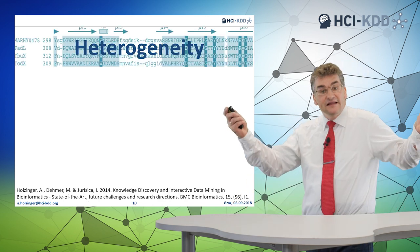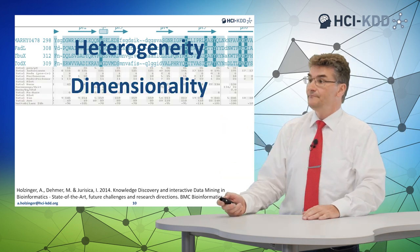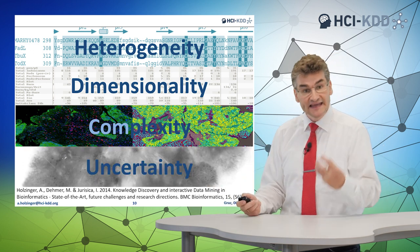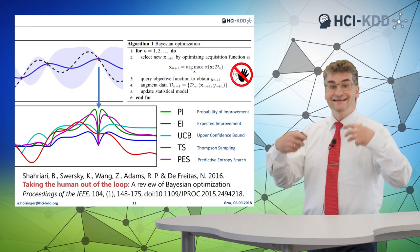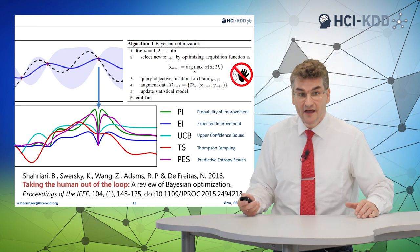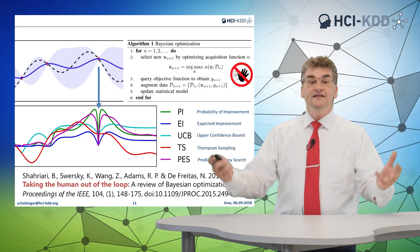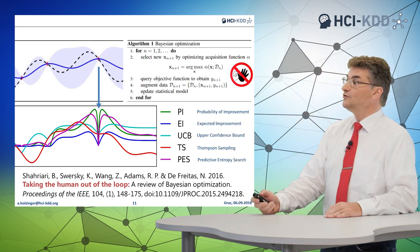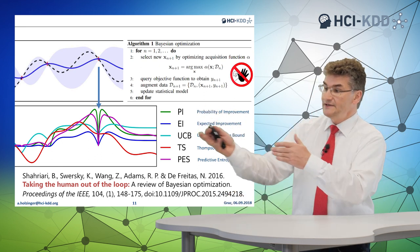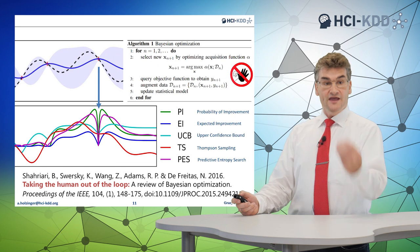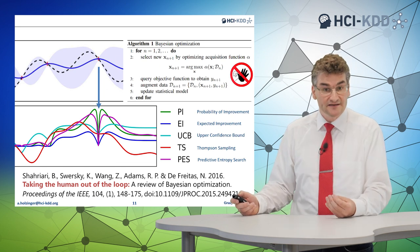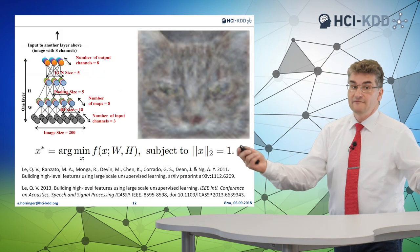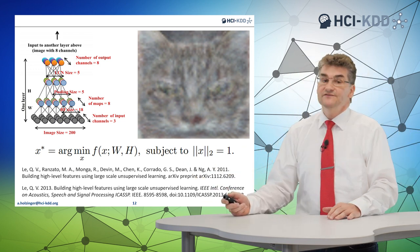The problem in building this bridge is the heterogeneity of the data, dimensionality, complexity, and most of all uncertainty. Here machine learning helps — for example, statistical probabilistic machine learning, fully automatically. The grand goal of the overall international computer science community is taking the human out of the loop, making it fully autonomous. This works well in certain domains, for example autonomous car driving, and also with image classification methods.